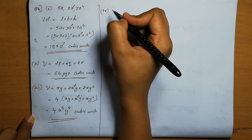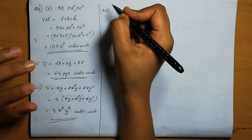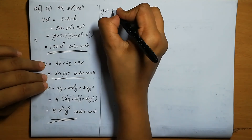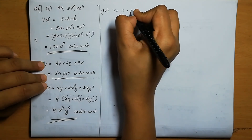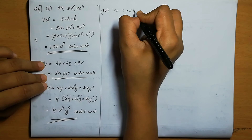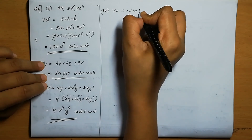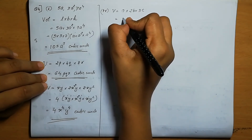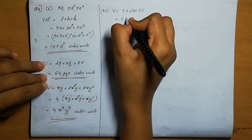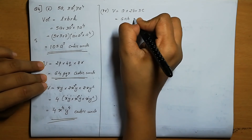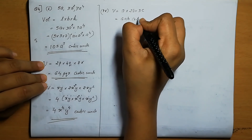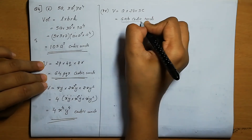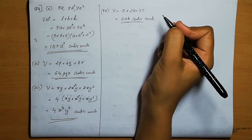Fourth one: a, 2b, 3c. Volume is a into 2b into 3c, which equals 2 into 3 is 6, giving 6abc cubic units.